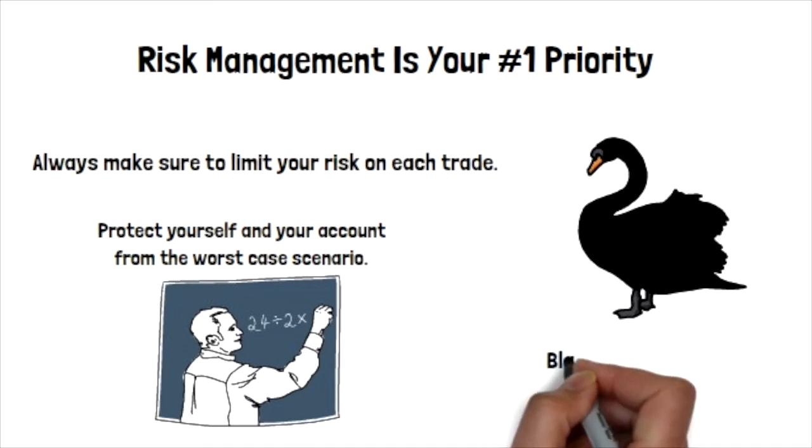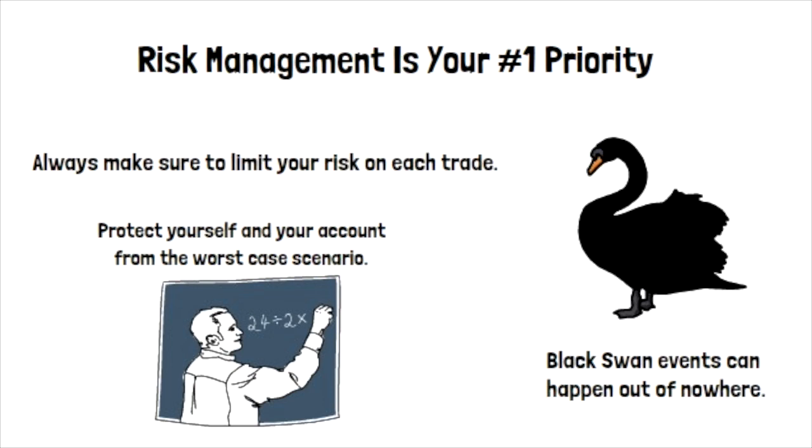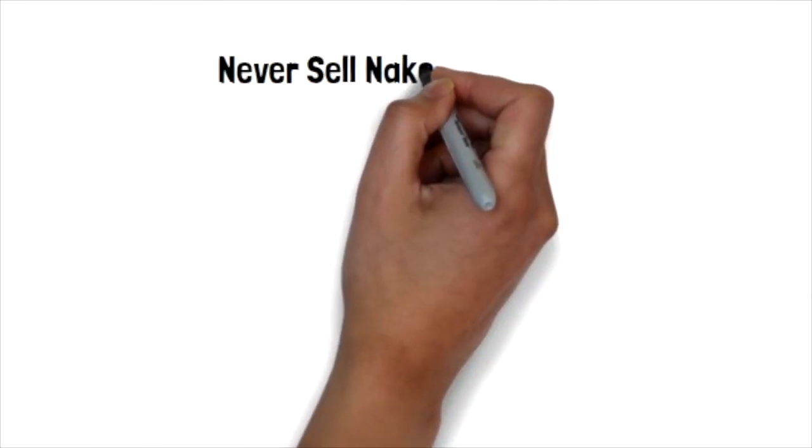However, there is always the chance of an unforeseen event or black swan appearing out of nowhere. Should an unexpected move occur, as it did in 1982 on Mark's city service trade, the option seller would be on the hook for a huge loss because he or she would have to purchase 100 shares of the stock at the strike price for each option contract they sold.